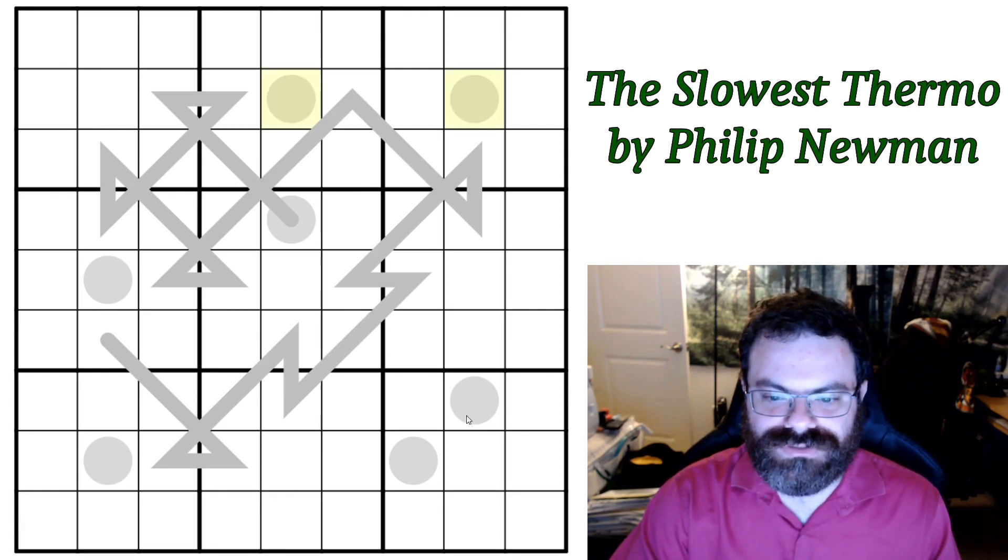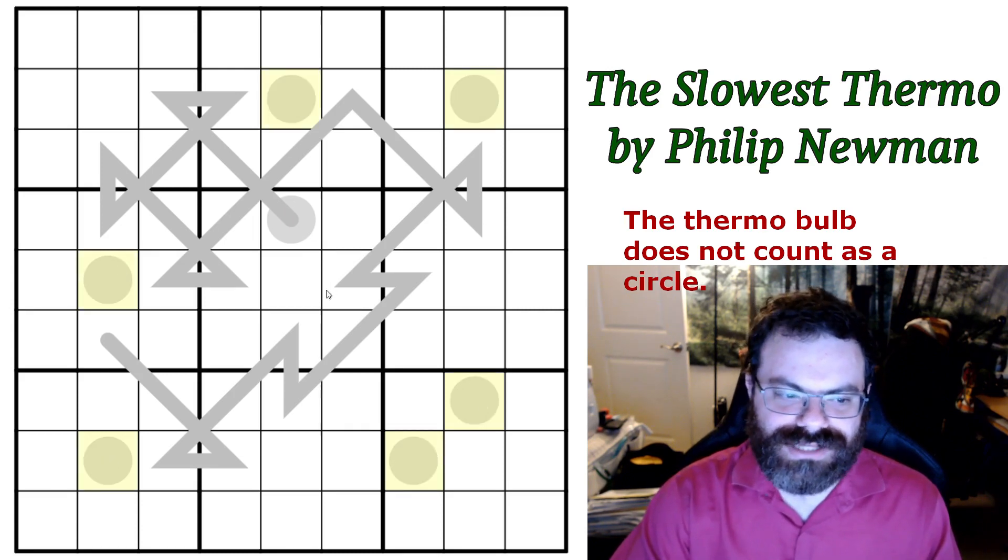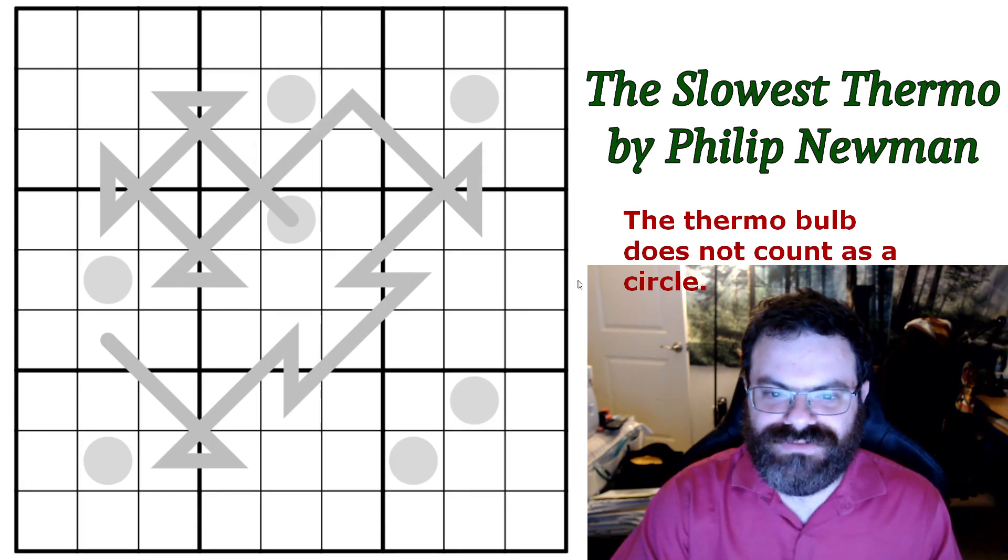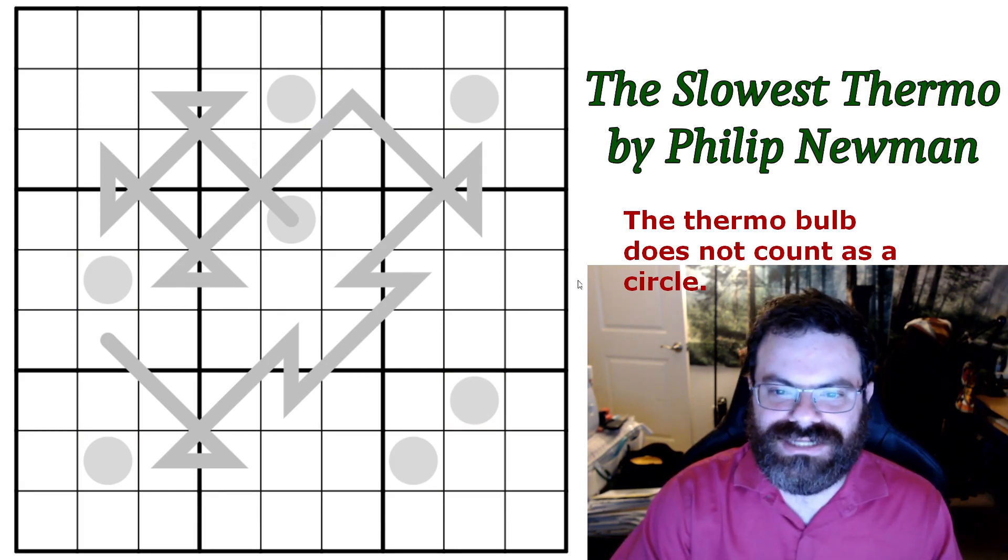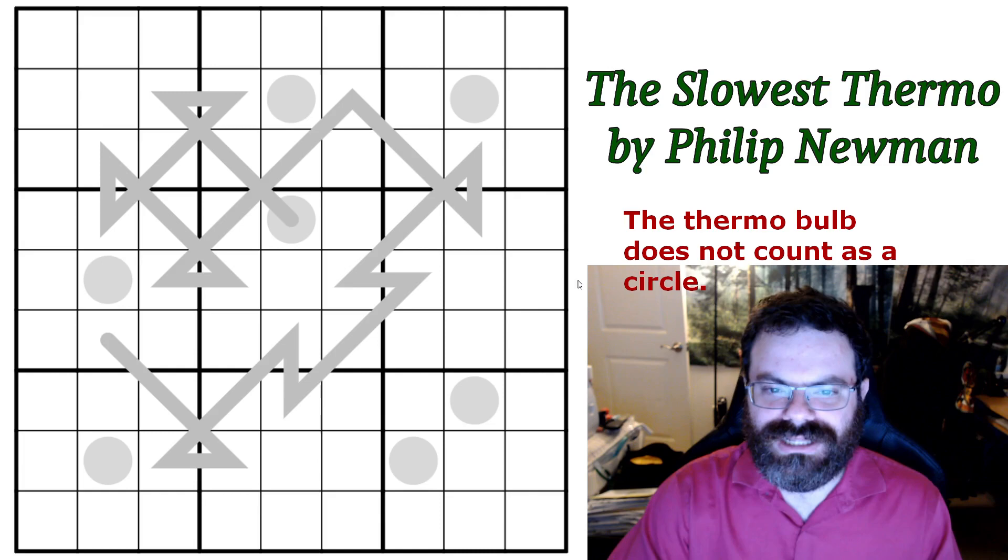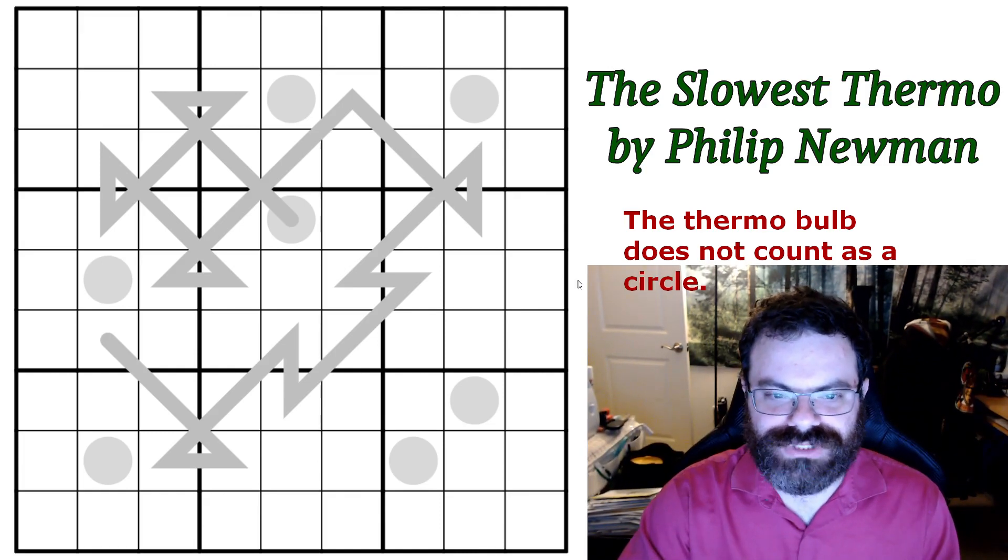And then also we have these circles around the grid, and they must be odd. Now I'm going to assume that doesn't include the thermometer bulb, so hopefully that is the case. But these other ones that have circles, they must be odd. And I'll put a little note on the screen if it ends up being that the other circle had to be odd, like it wasn't solved otherwise. But I'm pretty sure we don't need that. So go ahead and click the link below if you want to try this yourself, and I will get started.